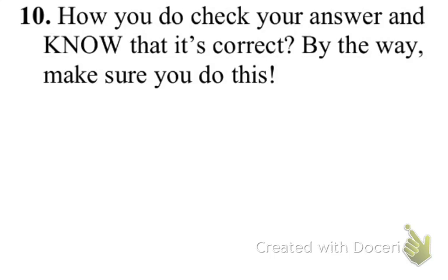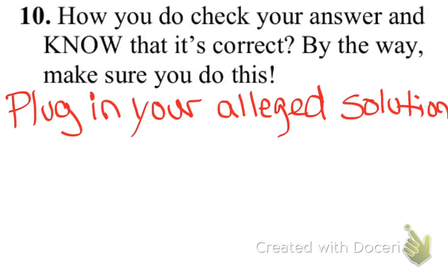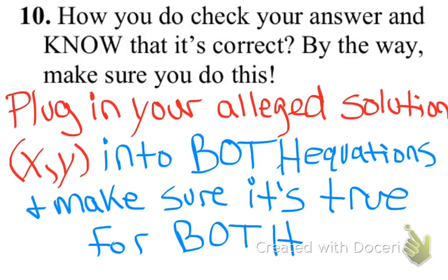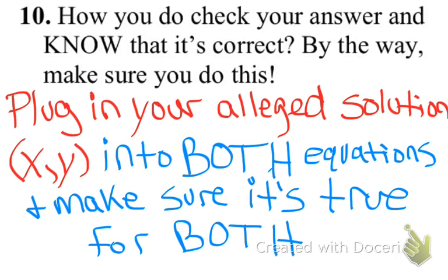Before we get started, let's talk about bonus question number 10. Fortunately, no one got it wrong, but it's something to think about. It says: how do you check your answer and know that it's correct? You simply have to plug in your alleged solution — an ordered pair with an x-coordinate and y-coordinate — into both of the equations, not just one.